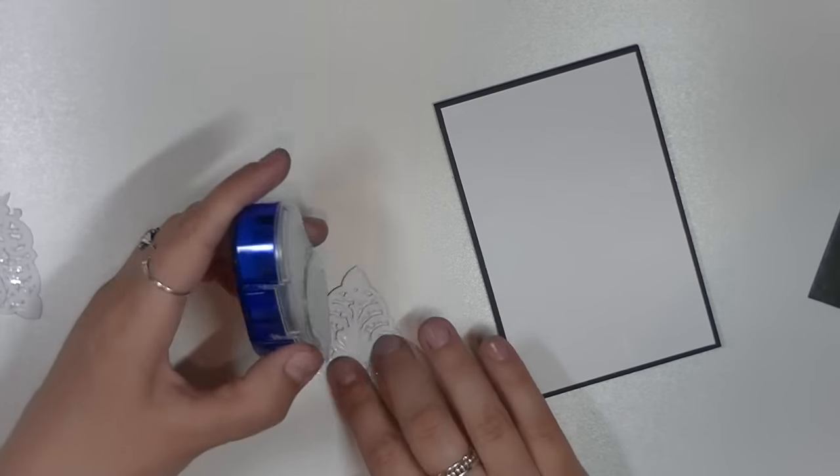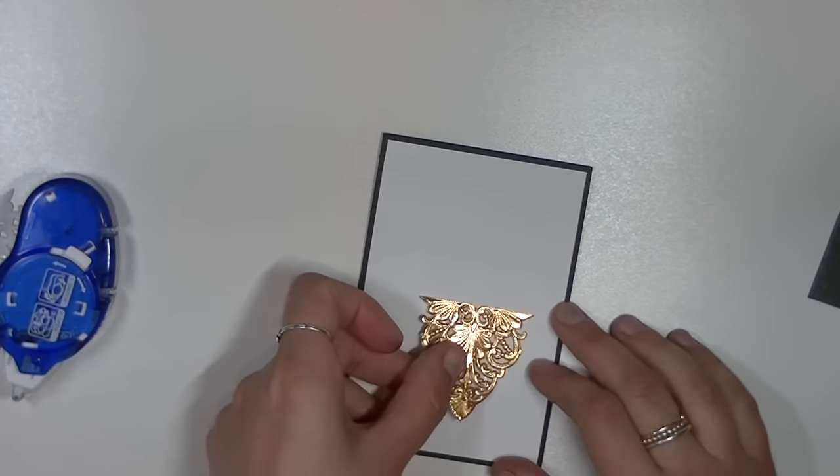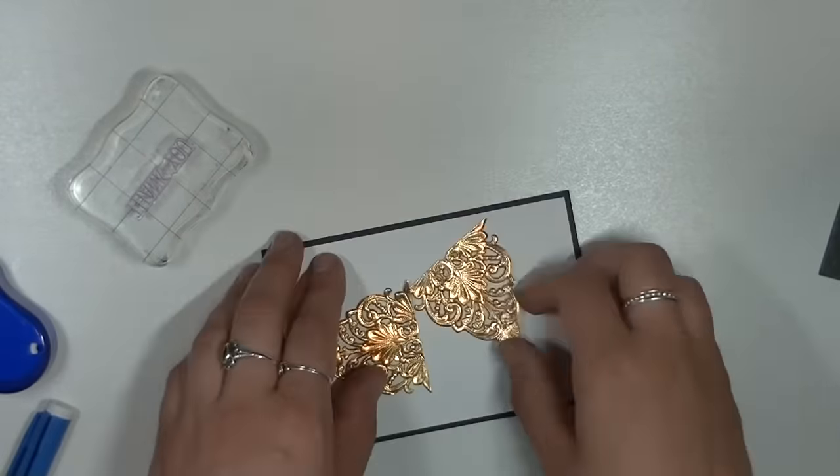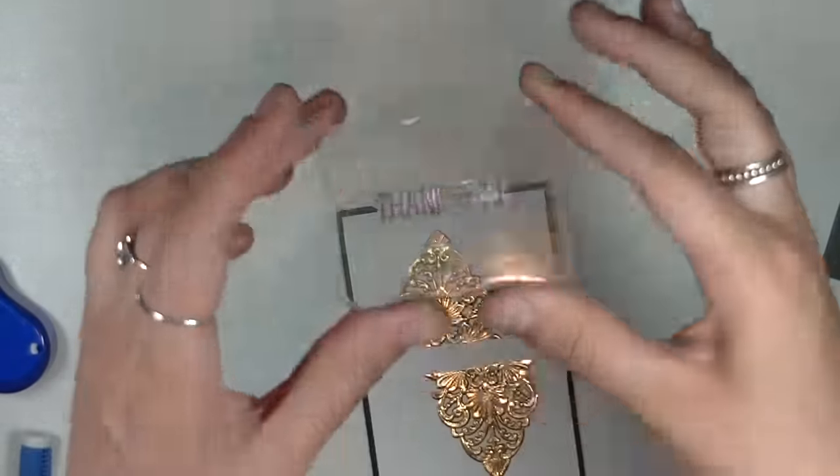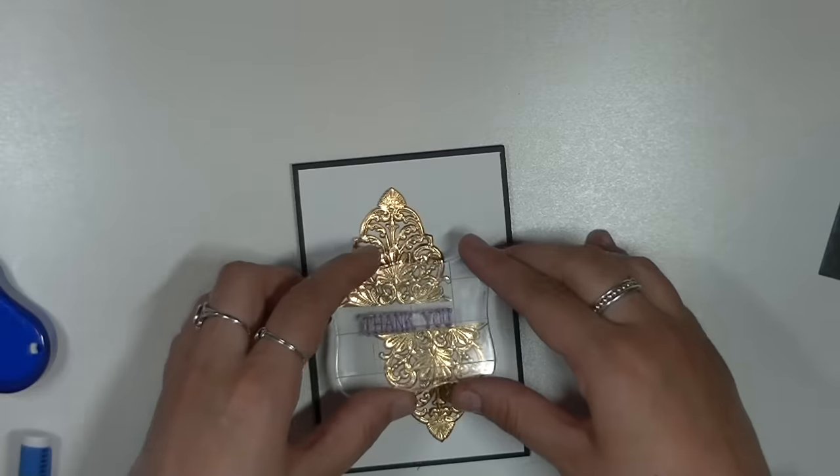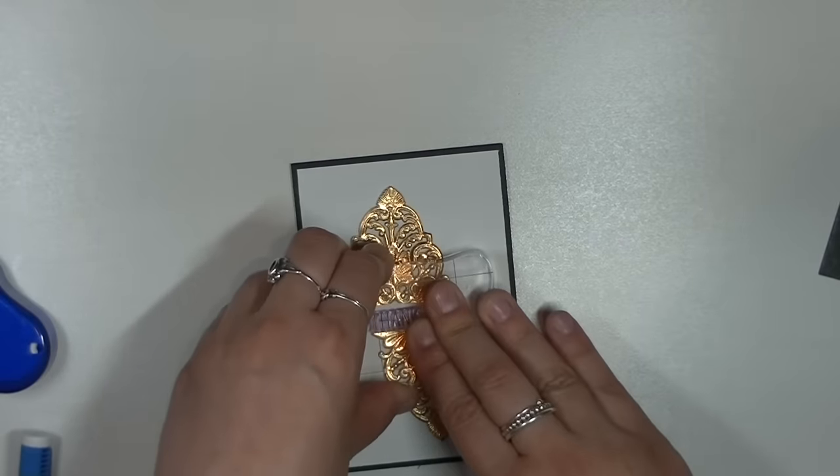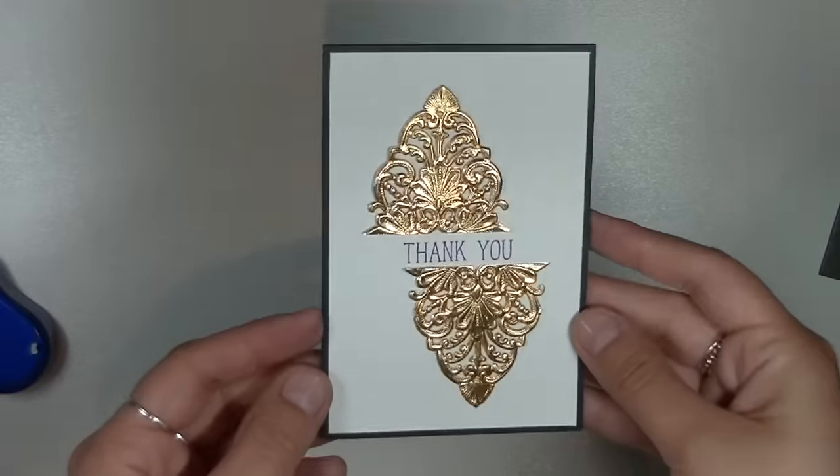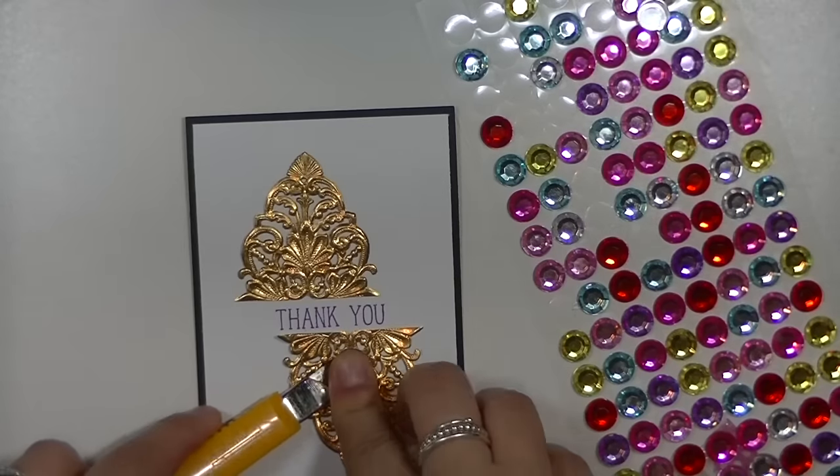This is the Fenstone decorative element from Altenew. I just cut it in half and off-centered it so I can add a sentiment from the Sokotoa stamp set in the center. You know me, I can't leave anything simple, so I had to add some bling onto it to further decorate the card. It's very simple but yet very elegant at the same time.